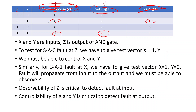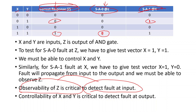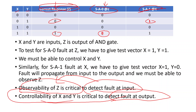To detect the fault at the input, the observability of the output is critical — there is a cross-correlation. For a fault at the input, we have to observe the output. Similarly, to detect the fault at the output, we must be able to control the inputs, i.e., set X=1 and Y=1. If we are not able to control the inputs, we can never detect the fault at the output. So to detect fault at input, observability of output is critical; and to detect fault at output, controllability of inputs is critical.